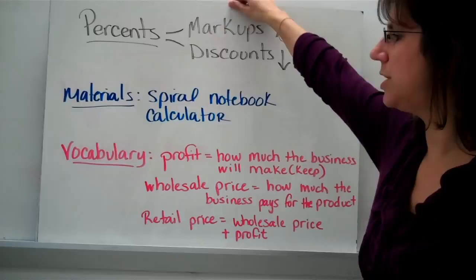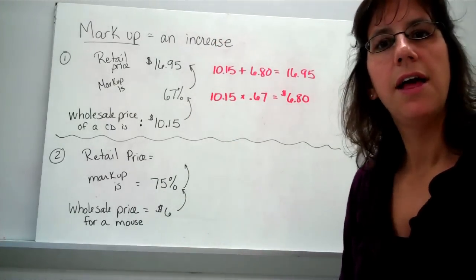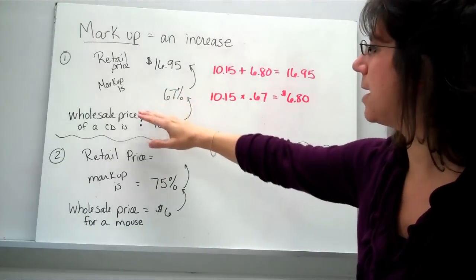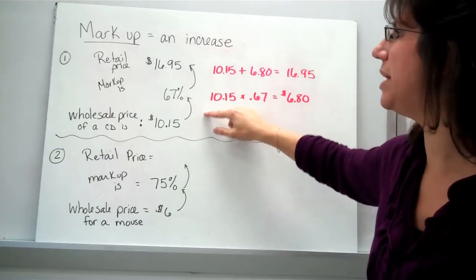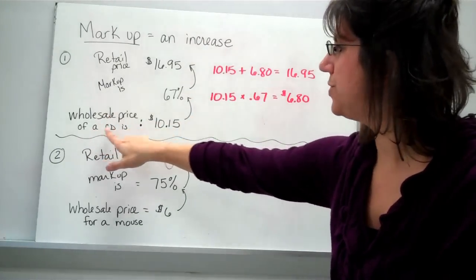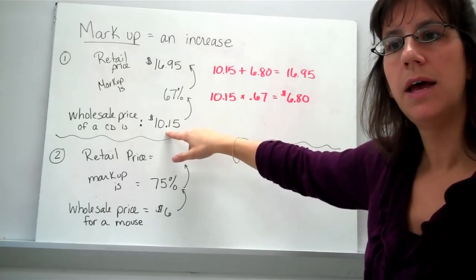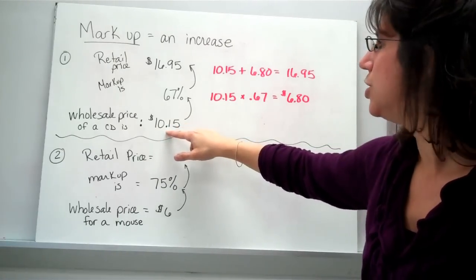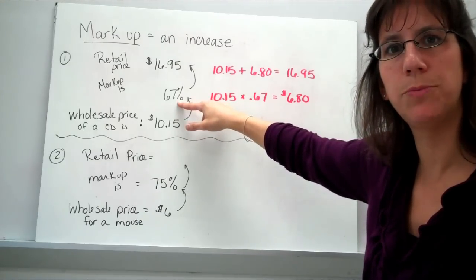Alright, we're going to start here with markups. Markups is an increase in a price. A company has to do markups in order to make a profit. So here's an example. And I know this kind of looks weird. I'm working my way up because I really wanted to show you that the price gets bigger when you have a markup. It increases. Here's the wholesale price of a CD. A company might buy a CD for $10.15. Now they're not going to sell it to you for $10.15 because they want to make a profit. So they're going to mark it up 67%. Seems kind of like a large markup, doesn't it?